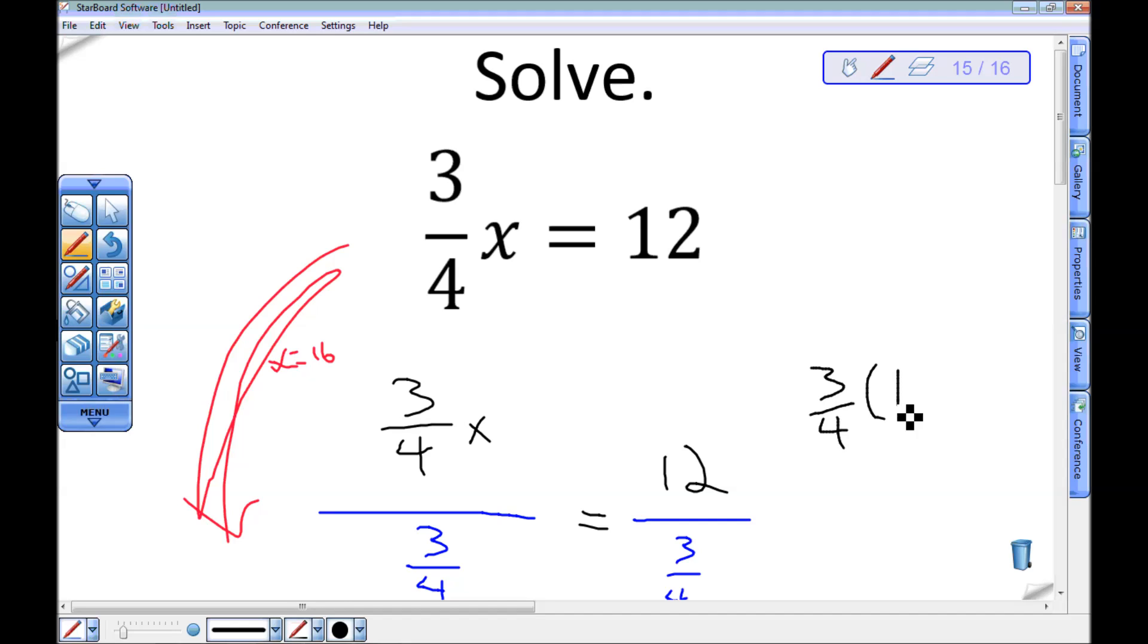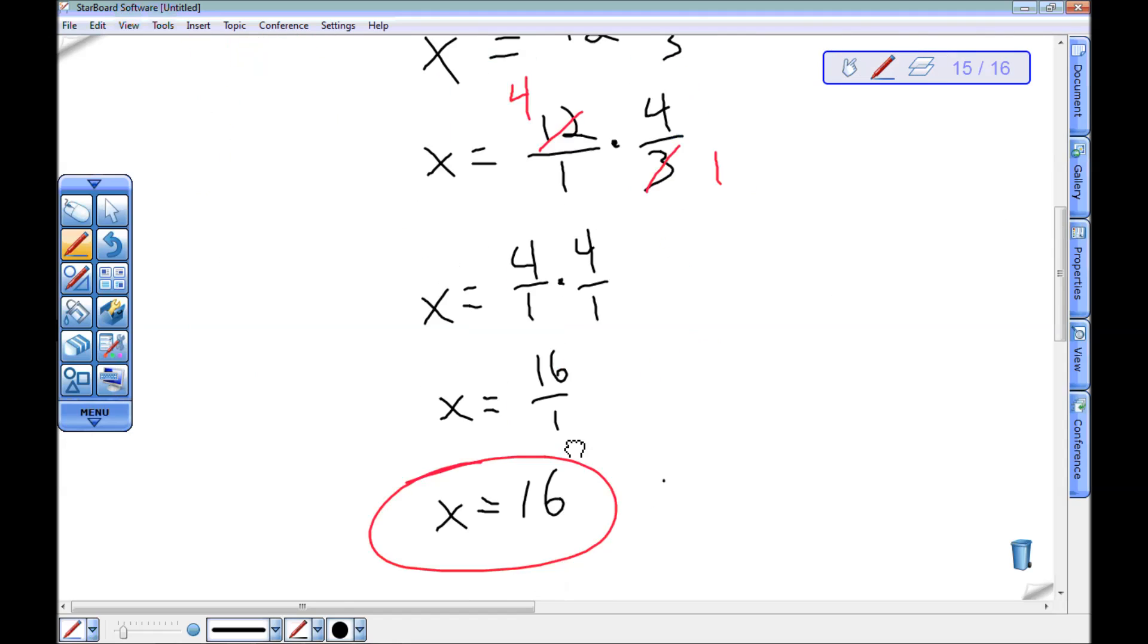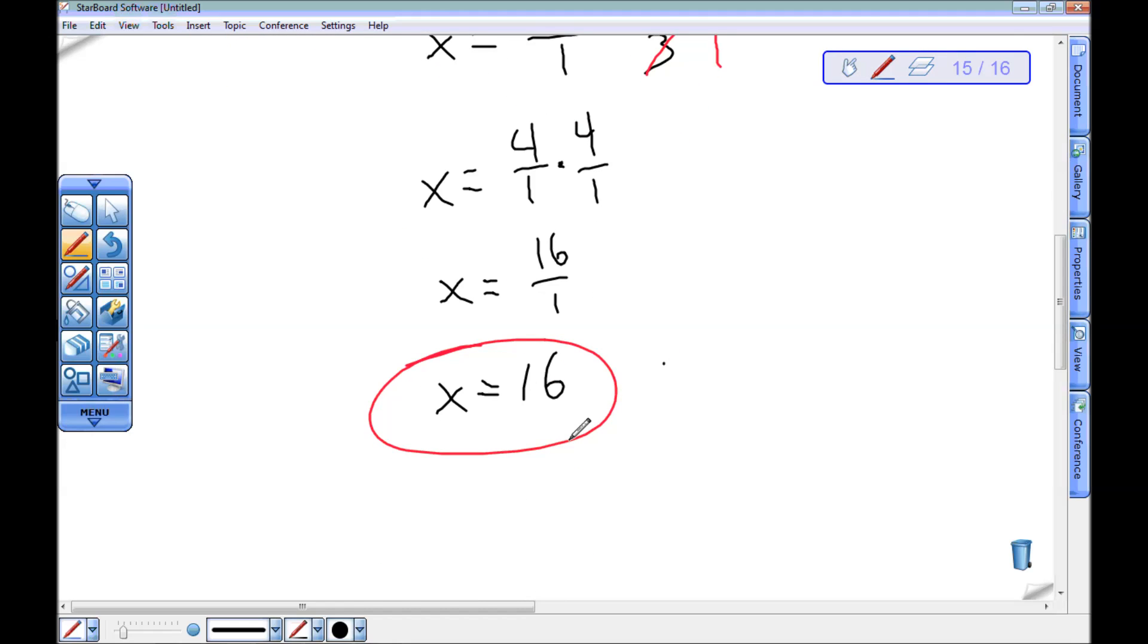3 fourths of 16. Well, 16 divided by 4 is 4, 4 times 3 is 12. So this is equal to 12. And 16 is my root of this equation. 16 is a root of 3 fourths x equals 12, because it's a root of x equals 16.